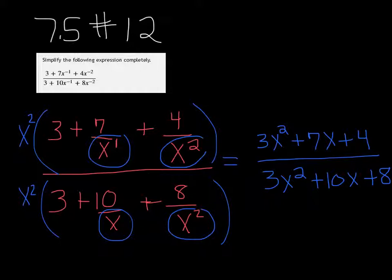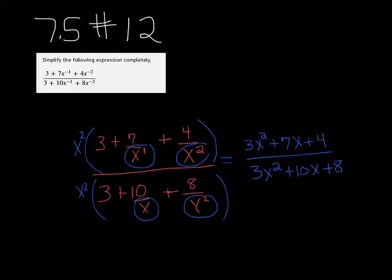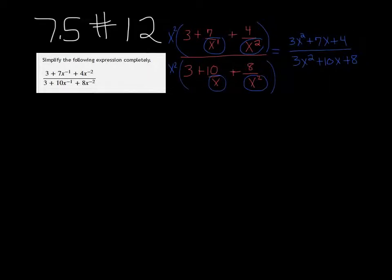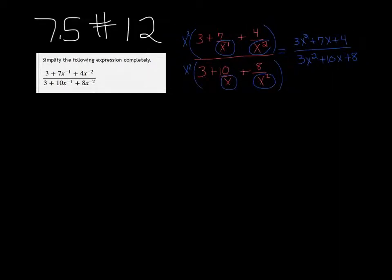Now it might not be finished here. Sometimes it wants us to simplify completely, so we have to check that it doesn't factor, or check that it does factor, and then we need to factor and cancel any common factors between the two.